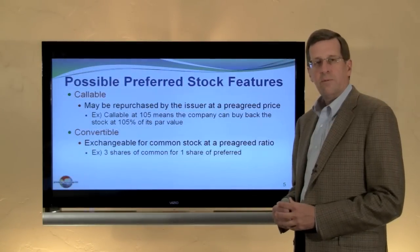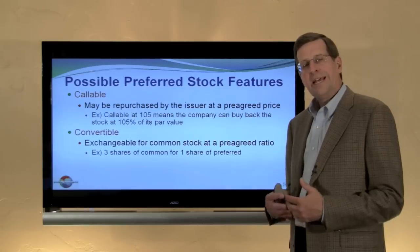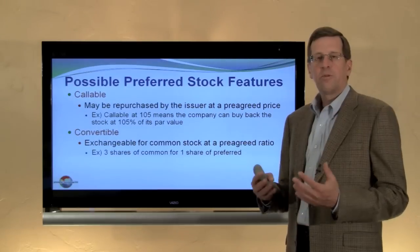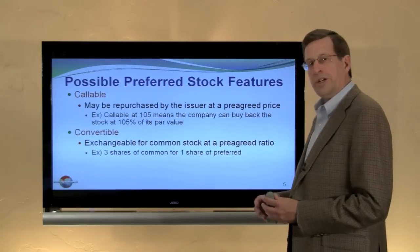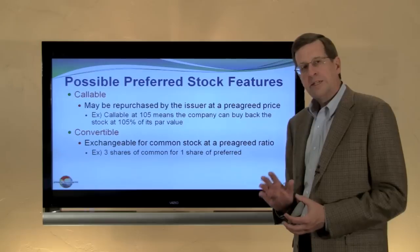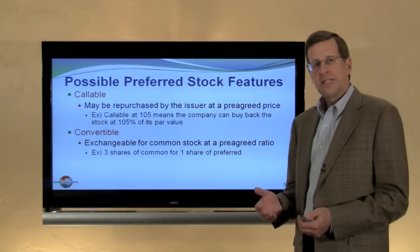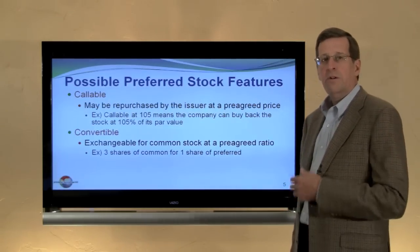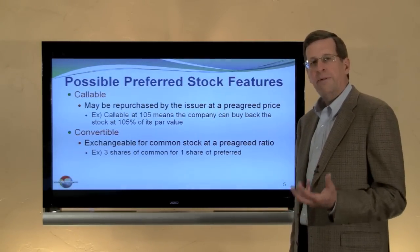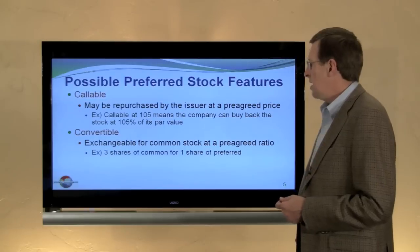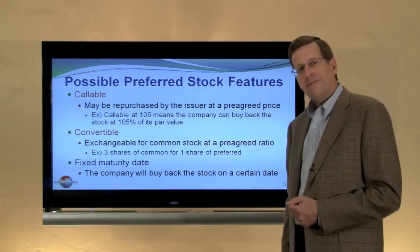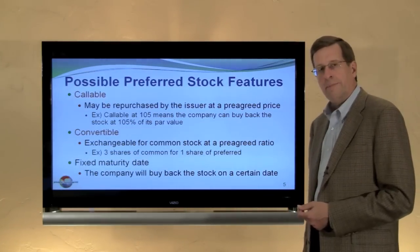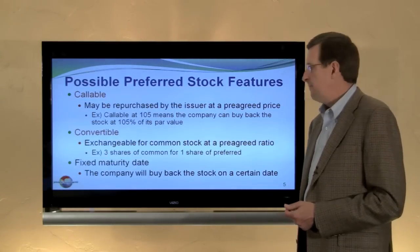Preferred stock may also be convertible. This is a nice feature because it enables the holder of those shares to exchange them for common shares. For example, there may be a 3-to-1 exchange ratio — three shares of common might be issued for one share of preferred. This is great from an investor point of view because they get their preferred dividend, and if the common stock appreciates significantly in value, they may be able to enjoy that ride by exchanging those preferred shares for the common. Some preferred stock may have a fixed maturity date that allows or even requires the company to buy back the preferred stock at some future date.